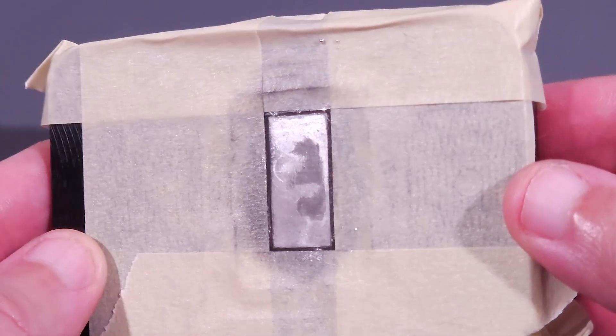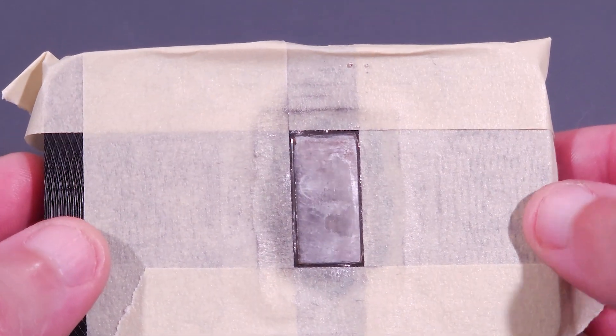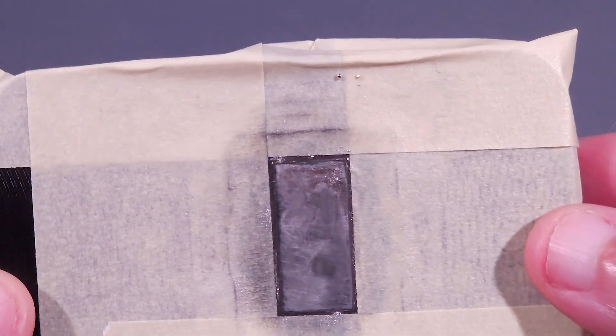There are still two small islands of solder that should be removed before moving to the polishing step, but I'm going to leave them there to show you what it looks like if you don't remove them prior to polishing.